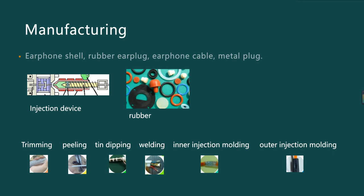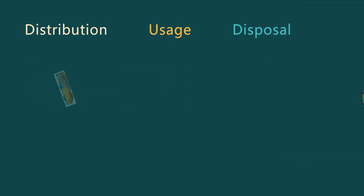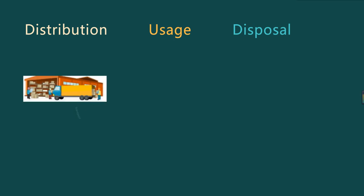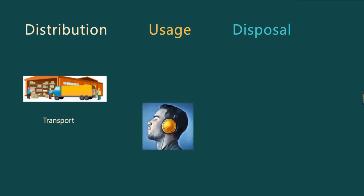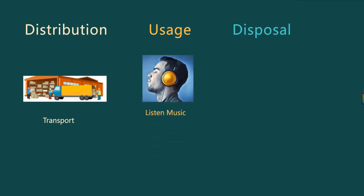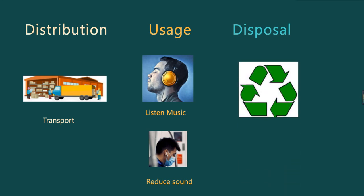The distribution of earphones involves acquiring and transporting them from manufacturing locations to places where there is demand. The usage of earphones allows people to listen to music and reduces the spread of sound. Finally, regarding disposal, waste earphones are basically recycled and then remanufactured.